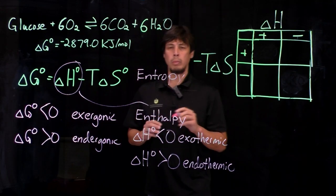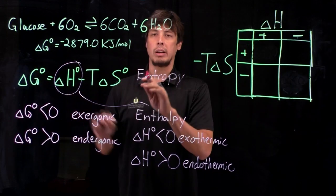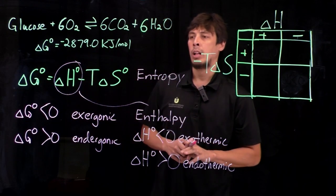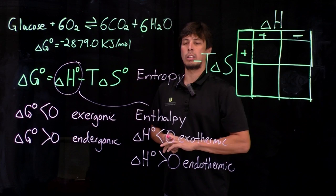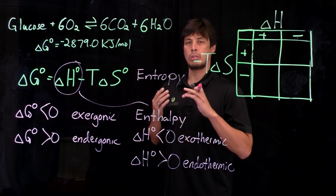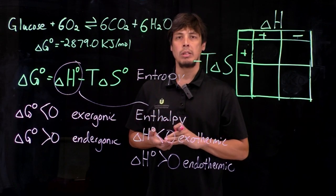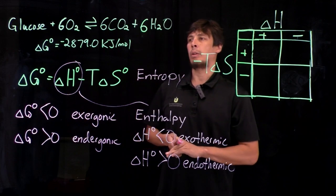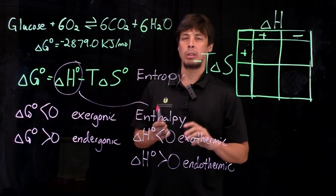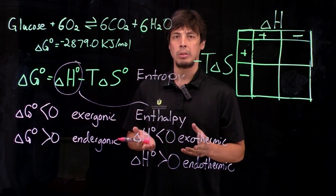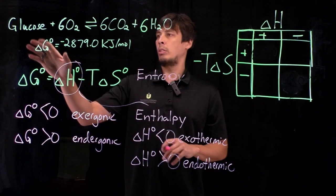When we go back and we look at the glucose reaction and we see the very negative delta G value, we can try to figure out why this delta G value is so negative. Part of that is because both the enthalpy term and the entropy term are favored.